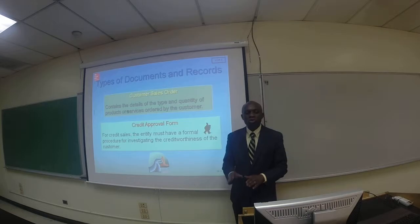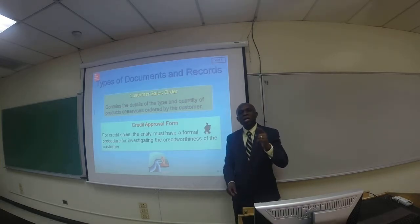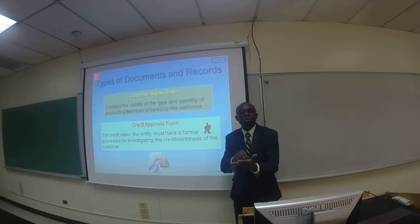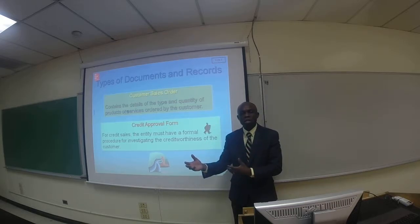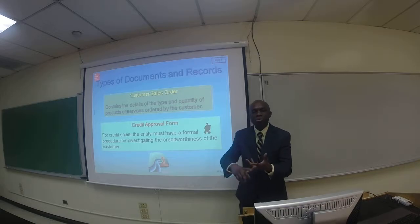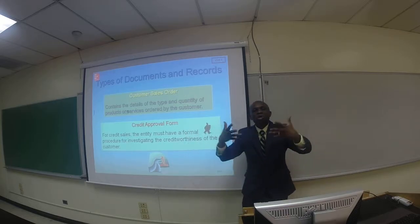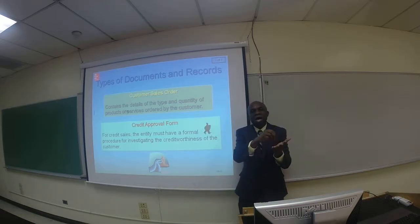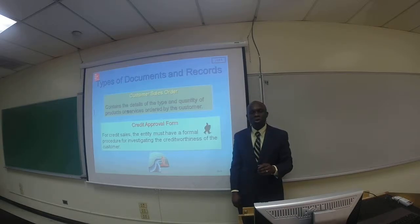Let's take a look at types of documents and records. Another name for a document is a source document or business record. The document relates to the records. When we talk about records, we are talking about accounting records like the journal, the ledger, the subsidiary ledger, and special journals like the sales journal and purchase journal — the actual records in which we record transactions. We use the document as the basis for recording transactions in the record; documents are evidence of the transaction. That would be the conclusion of Part 2 of the Chapter 10 presentation.